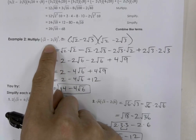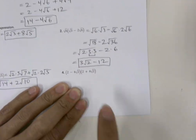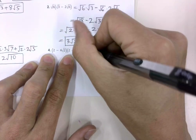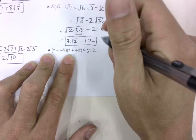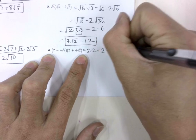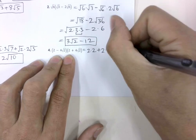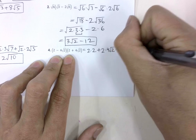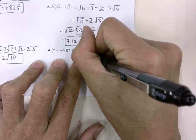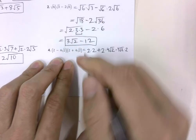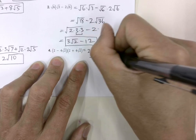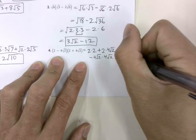Now we have one of these FOIL problems. First is going to be 2 times 2. Outside is going to be plus 2 times 4 square root 2. Inside is going to be minus 4 square root 2 times 2. And the last term — we have a minus times a plus — is minus 4 square root 2 times 4 square root 2.